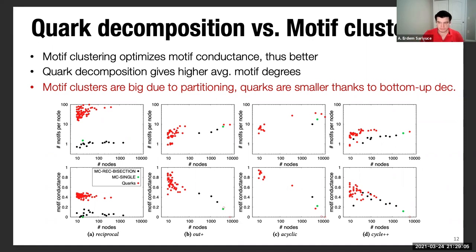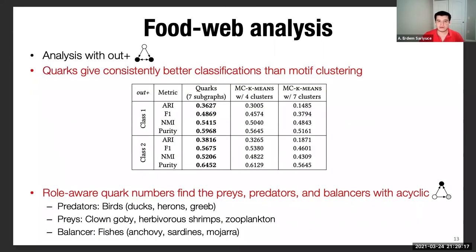In general, we found out that motif clusters are big due to the top-down partitioning scheme, but the quarks are smaller thanks to this bottom-up decomposition and can capture the small scale between 10 nodes and 100 nodes. We also compared those two algorithms on a use case for a food web analysis. We basically chose this art plus triangle and did classifications on a given Florida food web network with quark decomposition and also motif clustering. Quark decomposition consistently gives better classifications than the motif clustering with respect to both classification schemes and also for all the metrics.